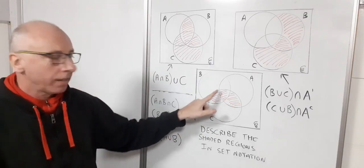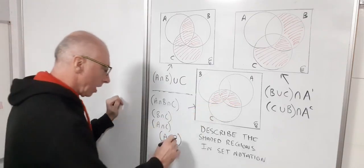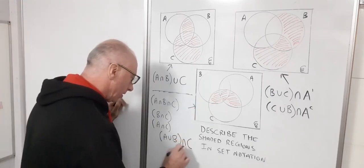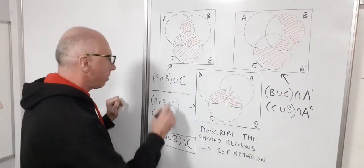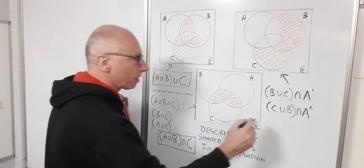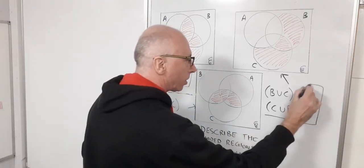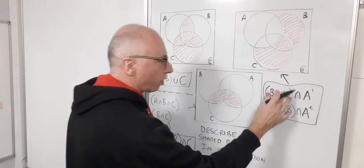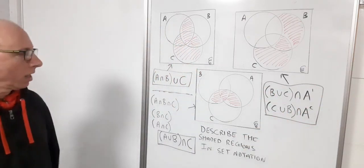What I want is only the bit that intersects C, so then I could put intersect C. That would take care of that one in set notation. So I'm going to declare these as my three answers in set notation. Those two of course are equivalent.